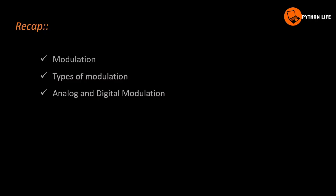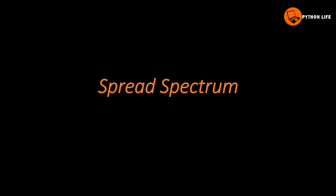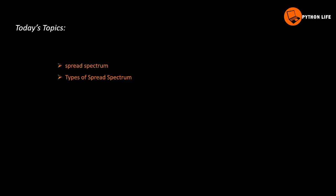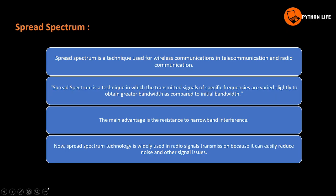Hi, welcome to Python Life. The previous topic is modulation and types of modulation, analog modulation and digital modulation. Today's subtopic is spread spectrum. The definition of spread spectrum: it is a technique used for wireless communications in telecommunication and radio communication, in which the transmitted signals are spread across specified frequencies to obtain greater bandwidth compared to the initial bandwidth.